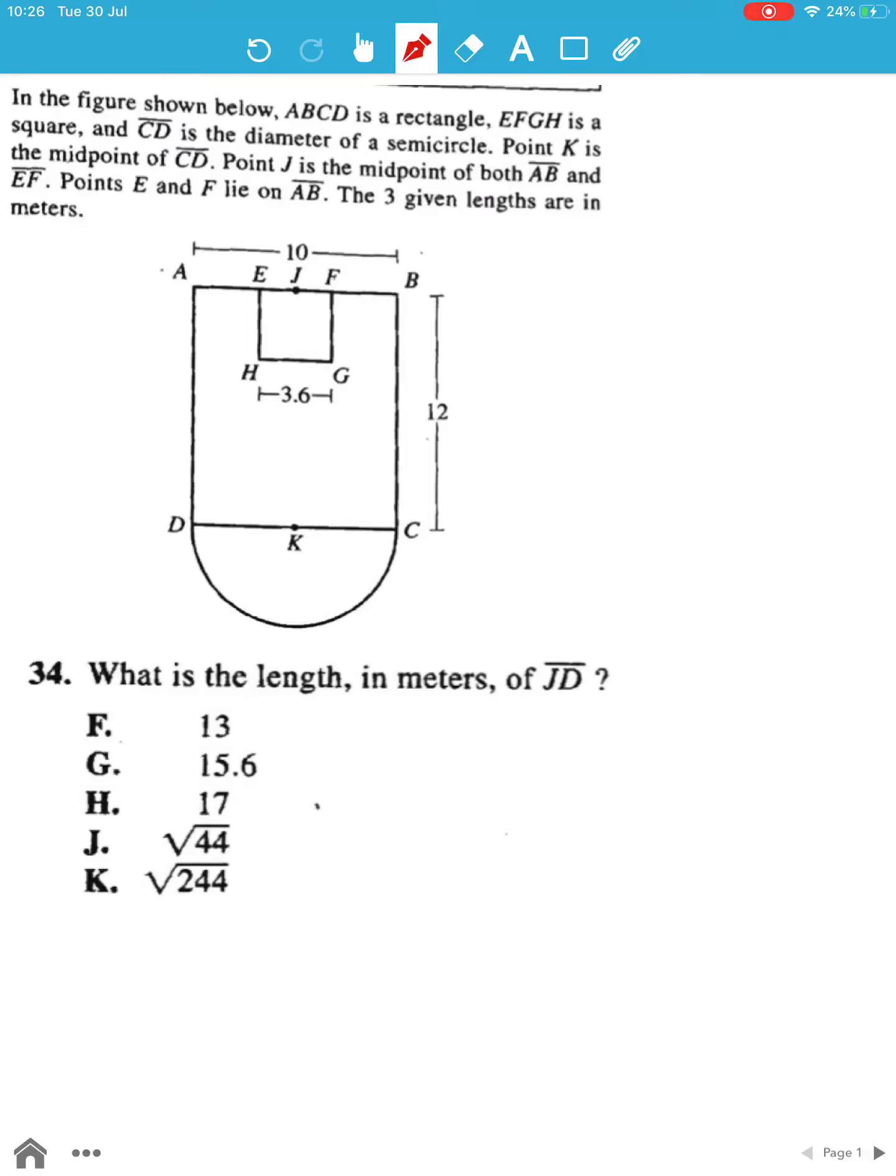For question number 34 we have to find out the length of JD. Now AJD out here forms a right-angled triangle.